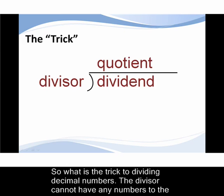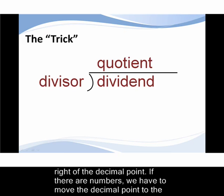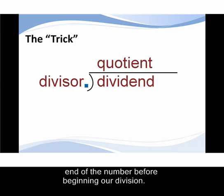So what's the trick for dividing decimal numbers? The divisor cannot have any numbers to the right of the decimal point. If there are numbers we have to move the decimal point to the end of the number before beginning our division.